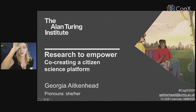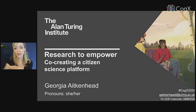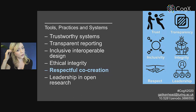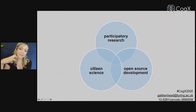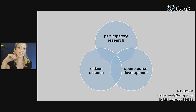I'm going to be talking about a project I'm doing with Kirstie Whitaker at the Turing to co-create a citizen science platform. This fits into the Tools, Practices and Systems value of respectful co-creation, although arguably it fits into all of these themes. It's at this interesting intersection of three different types of cutting-edge methods for doing research: participatory research, citizen science, and open source development.